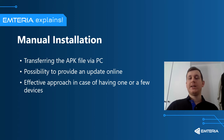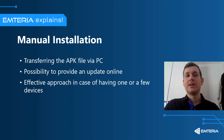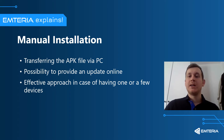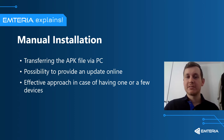Another way is to do it manually. If you already have an APK file and the device right in front of you, plug it into your PC and transfer the APK file. Once the file has been transferred, the update can be installed. You can also provide an update online and download it via the browser. If you have only one or a few devices, this approach works fine.